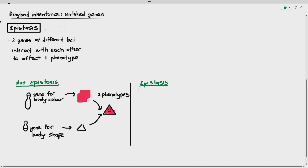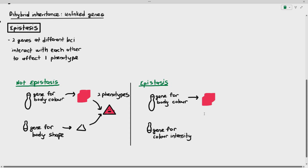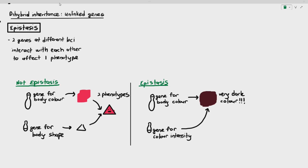But in epistasis, two genes at different loci affect one phenotype. As an example, there is a gene for body color which makes the color red, but there is a different gene on a different chromosome, a different loci, and they affect color intensity — making the red color become dark red, almost a brownish color. So two different genes affect only one phenotype. That is what epistasis is all about.